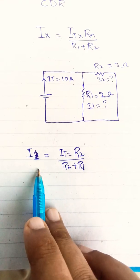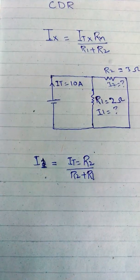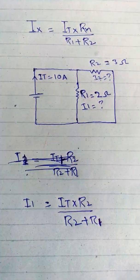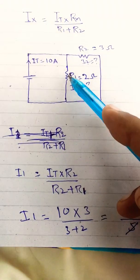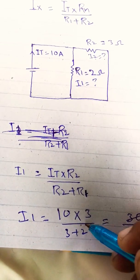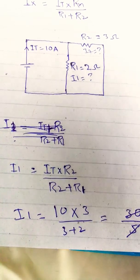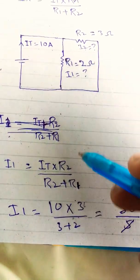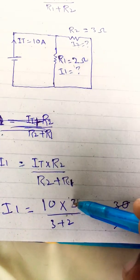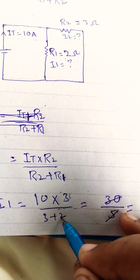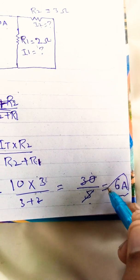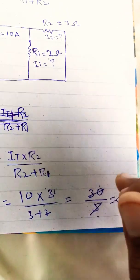Now we make the equation for i1. We put in the values: total current is 10 amperes, and R2 is 3 ohms. The formula gives us R2 divided by R1 plus R2, so that is 3 divided by 2 plus 3. This gives us 10 times 3 divided by 5, which equals 30 divided by 5, so i1 equals 6 amperes.